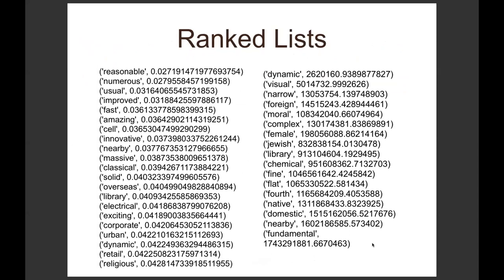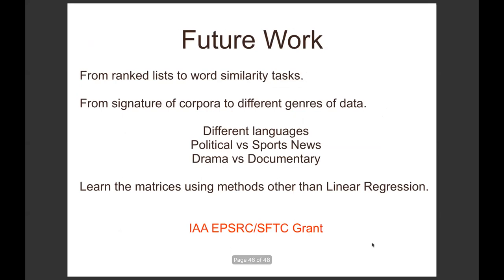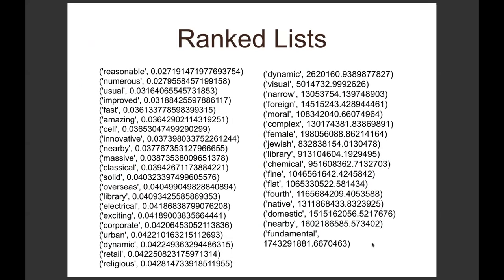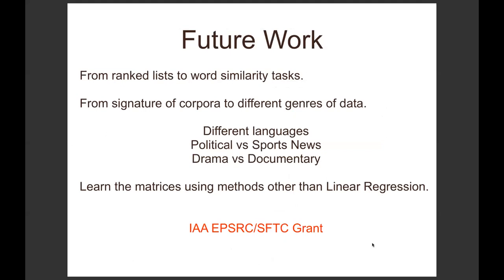Based on these deviations, we produced ranked lists for each moment. I'll show you some of the higher order ones: reasonable, numerous, usual, improved, fast, amazing, dynamic, visual, narrow, foreign, moral, complex, female, Jewish, literary for the other one. What is the correlation between these adjectives? We have been eyeing them, and that's why I'm wearing glasses, because it's very hard to find any relationship between them. My last slide, future work, is to find - as you can see, each of these words comes with their deviation.